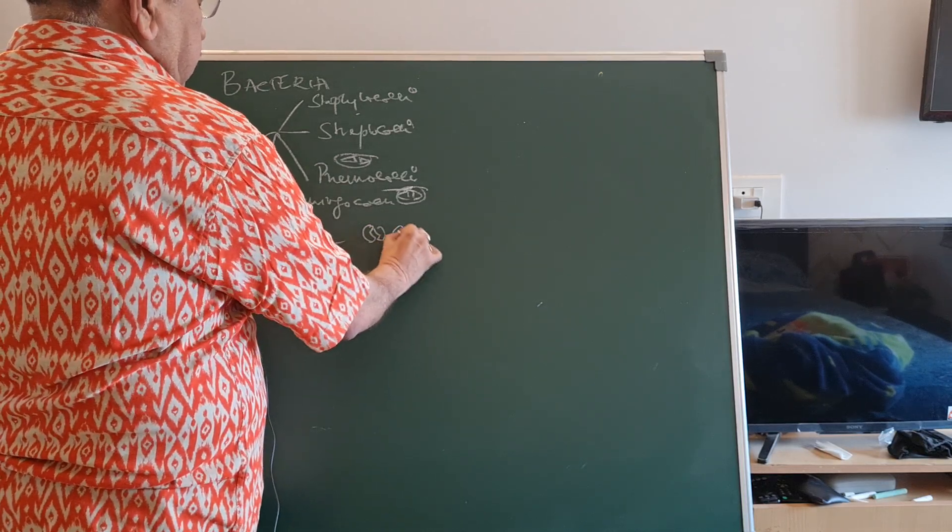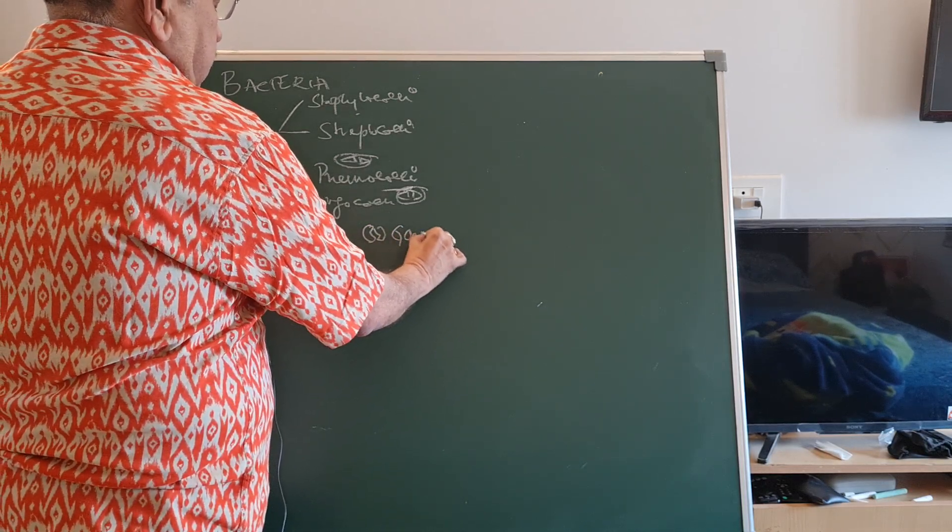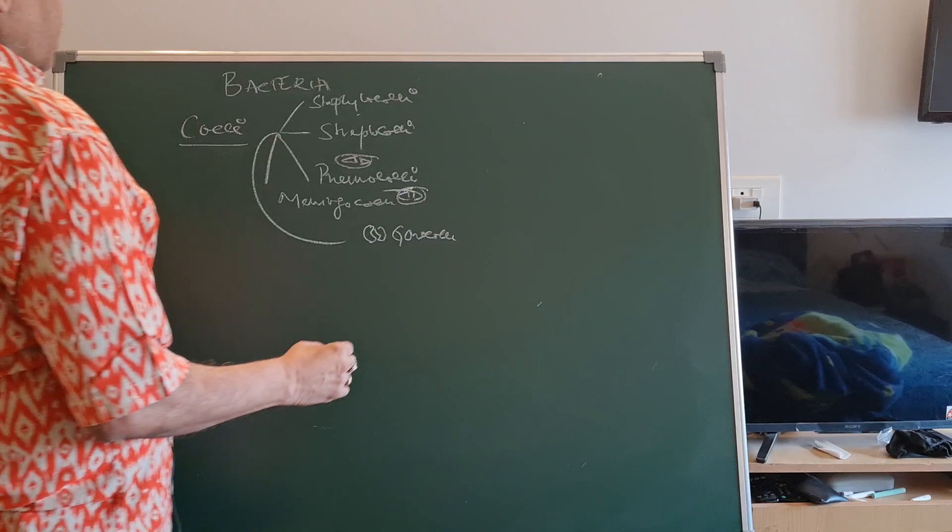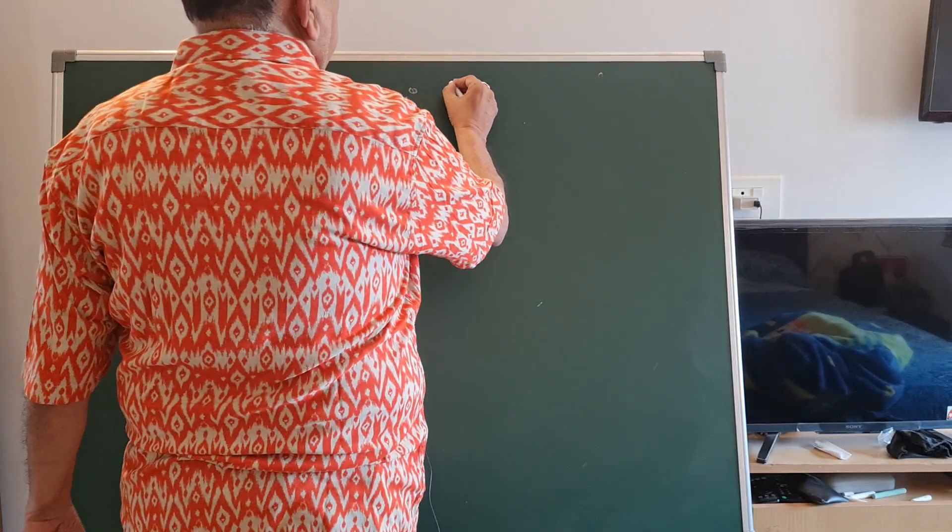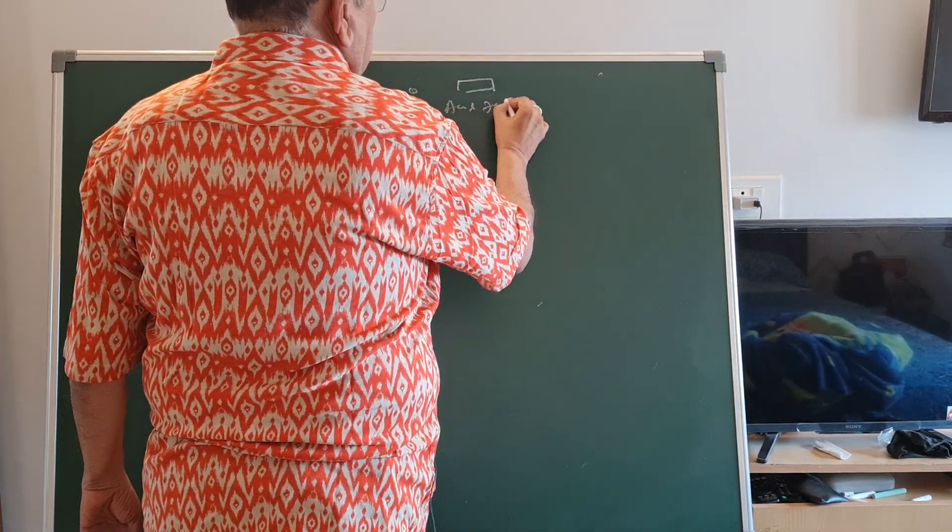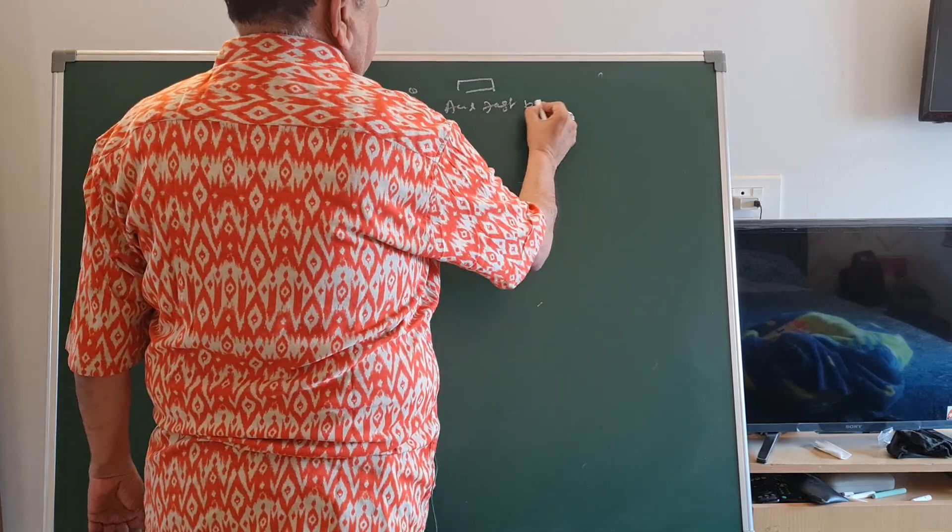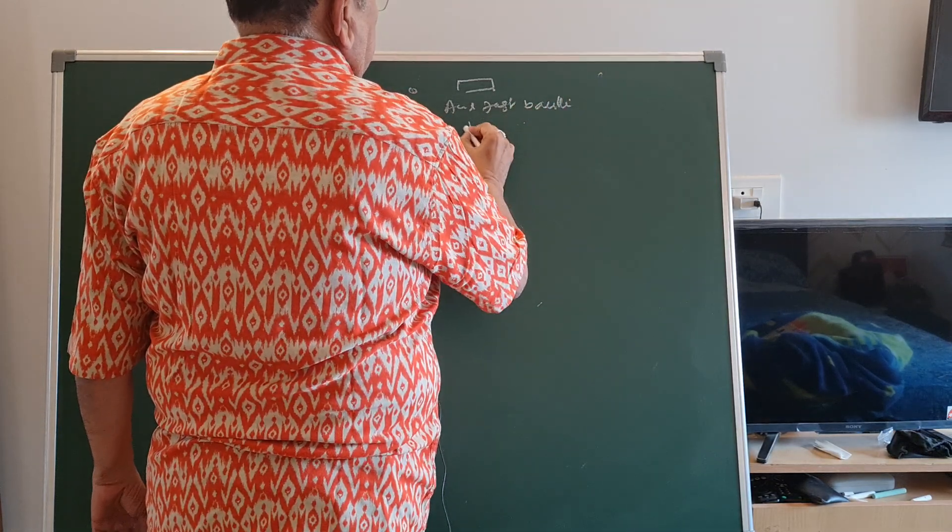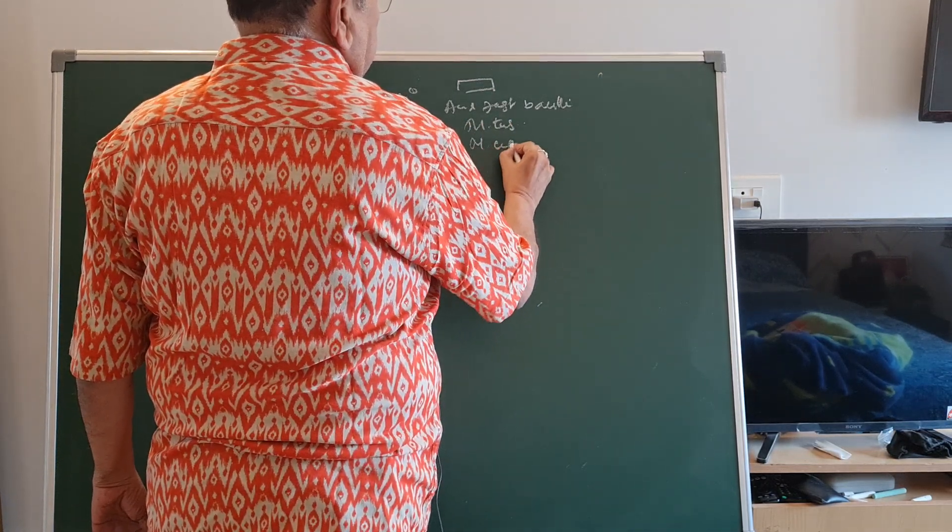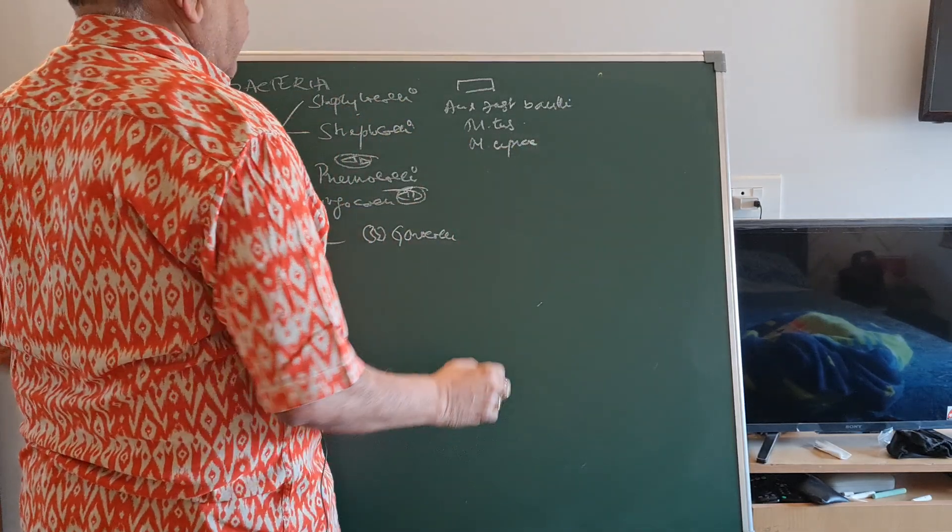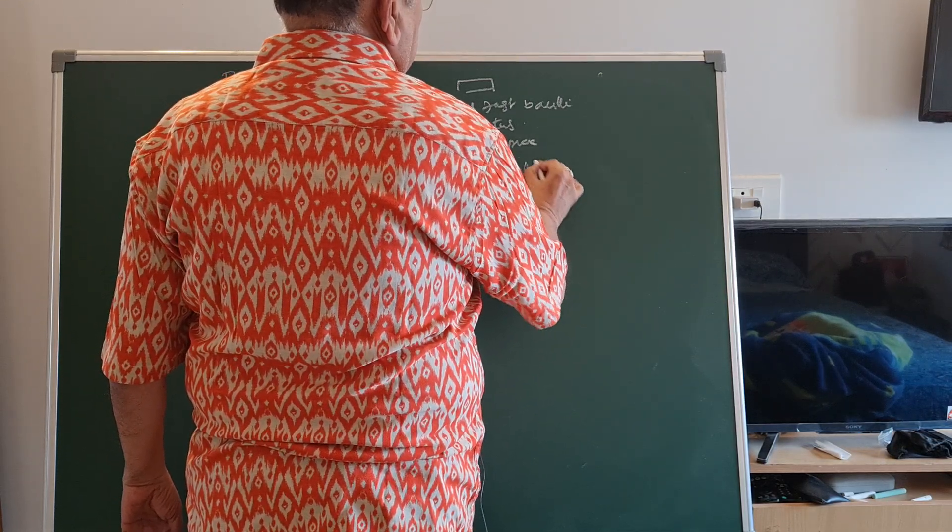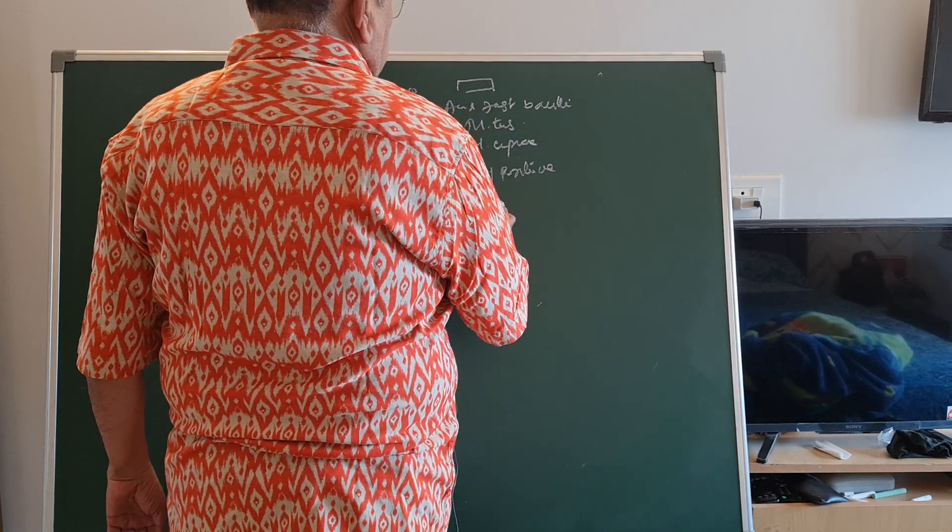Half moon shaped, two cocci enclosed in a capsule. Most of the strains are encapsulated. Then gonococci, kidney shaped, concave facing each other. So this is the cocci. The rod shaped organisms are classified depending on three criteria. One is acid-fast bacilli, example M. tuberculosis and M. leprae. Then gram-positive.